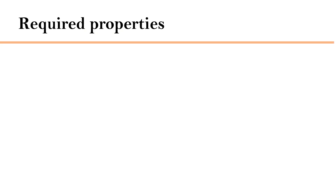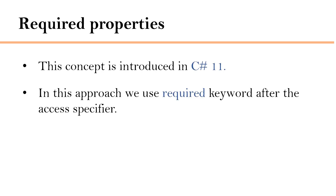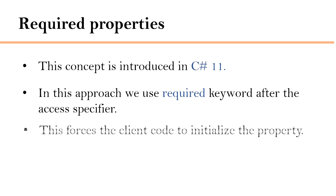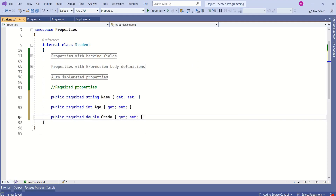Next we have required properties. This concept is introduced in C-Sharp 11. In this approach we use the required keyword after the access specifier, which forces the client code to initialize the property. We write required properties like this — using the required keyword.